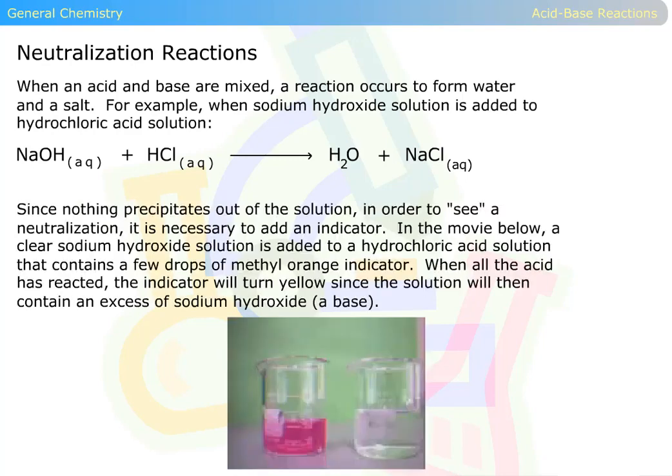Since nothing precipitates out of the solution, in order to see a neutralization, it is necessary to add an indicator. In the movie below, a clear sodium hydroxide solution is added to a hydrochloric acid solution that contains a few drops of methyl orange indicator. When all the acid has reacted, the indicator will turn yellow since the solution will then contain an excess of sodium hydroxide, a base.